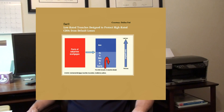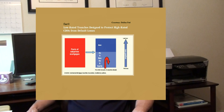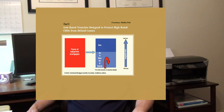Rating agencies ignored the poor lending practices inherent in the mortgage pools themselves. They also failed to accurately assess the likelihood that the domestic housing market would enter a sustained downturn.